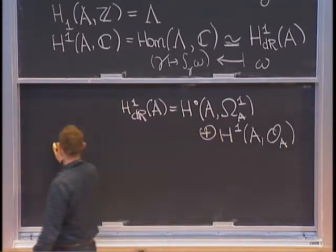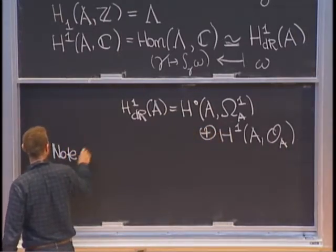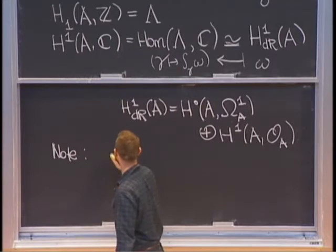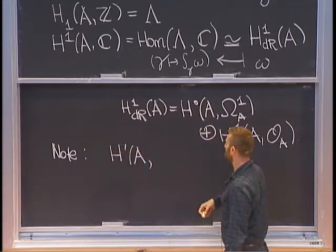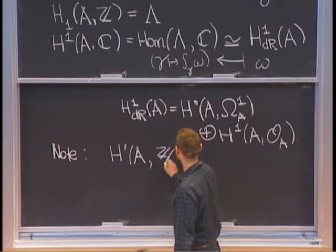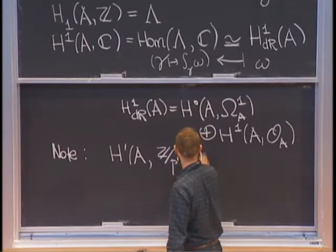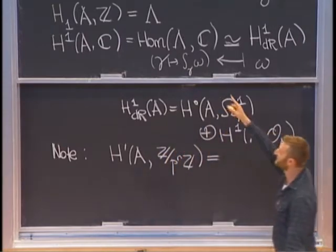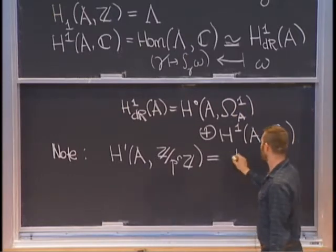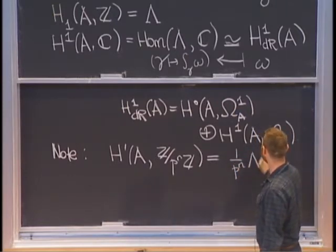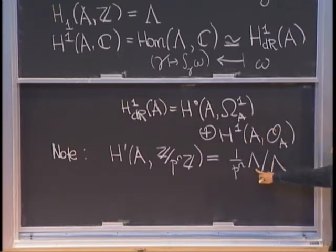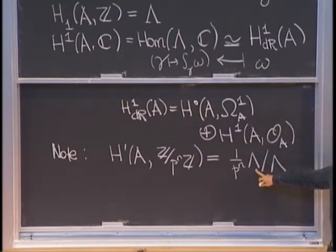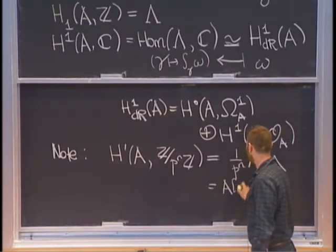I'm about to switch to p-adic coefficients. So what is H₁ of A with ℤ_p coefficients? First let me do H₁ of A with ℤ/pⁿℤ. That's like Λ tensor ℤ/pⁿℤ. Let me rewrite that as (1/pⁿ)Λ mod Λ. So the pⁿ division points of Λ is like the pⁿ torsion in A, which is A[pⁿ].